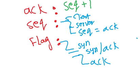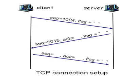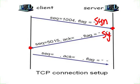So let's go back to our example. The first thing: we start with the sequence, and the sequence here is 1004, and we have a flag — the flag here is SYN — because we send from client to the server. The server receives this and sends it back to the client. When it sends back to the client, the flag is SYN-ACK at the same time. In the first step we don't have an acknowledgement, but in the second step we have an acknowledgement.